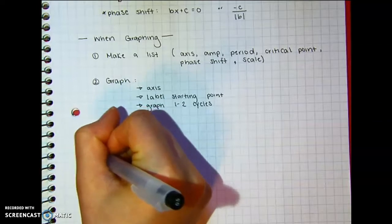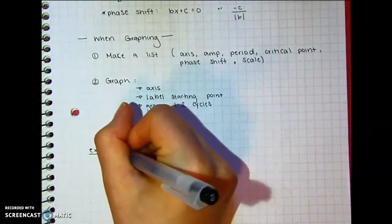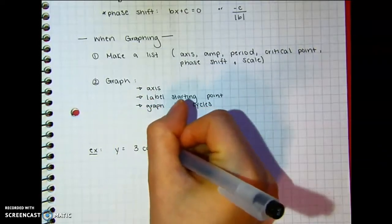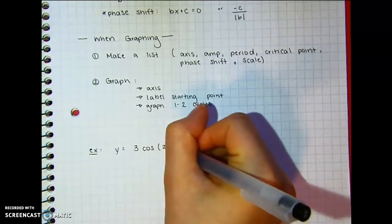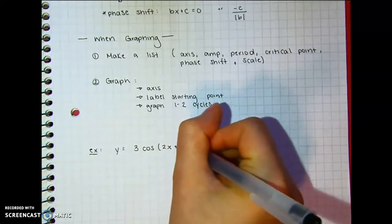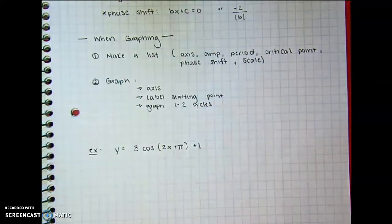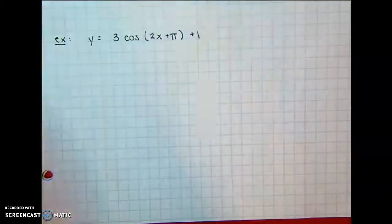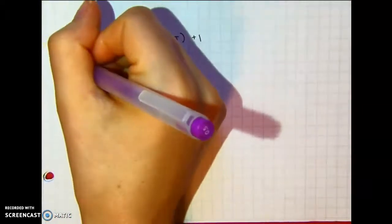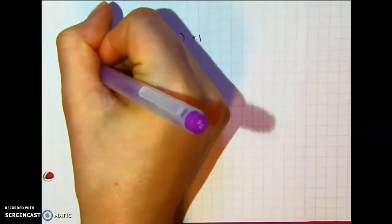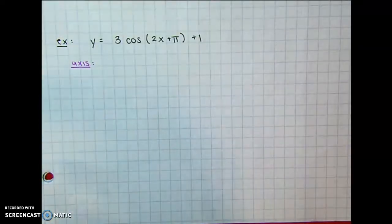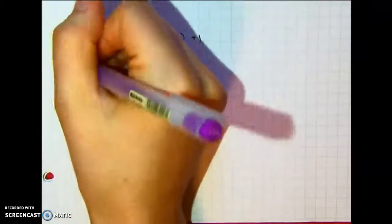So let's do y equals 3 times cosine of 2x plus π and then plus 1. So first thing we're going to do is make that list. So let's do the axis. And I always go in the same order so that I always remember everything where I try to go in the same order.